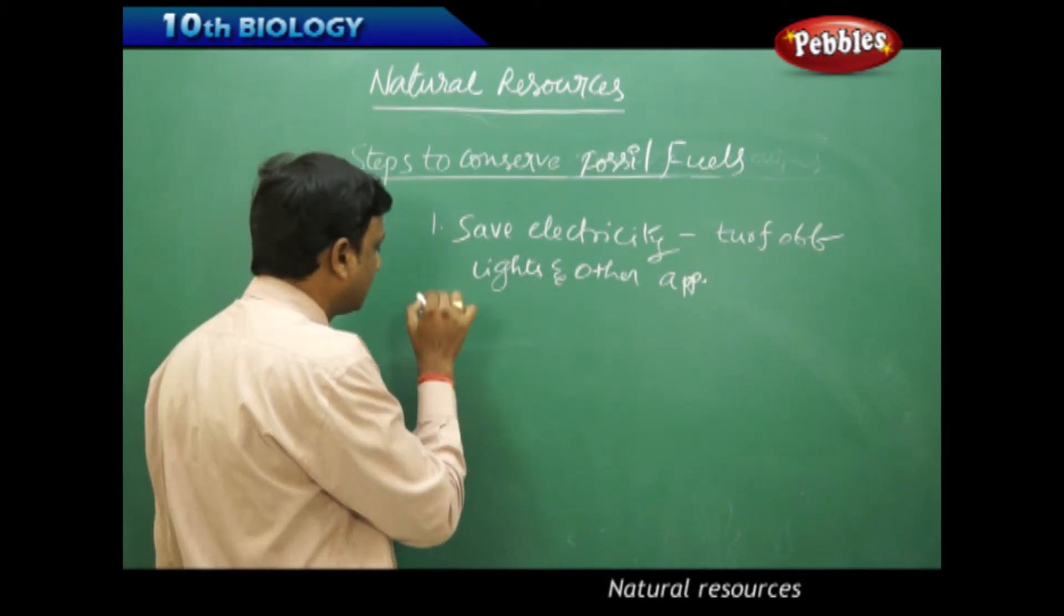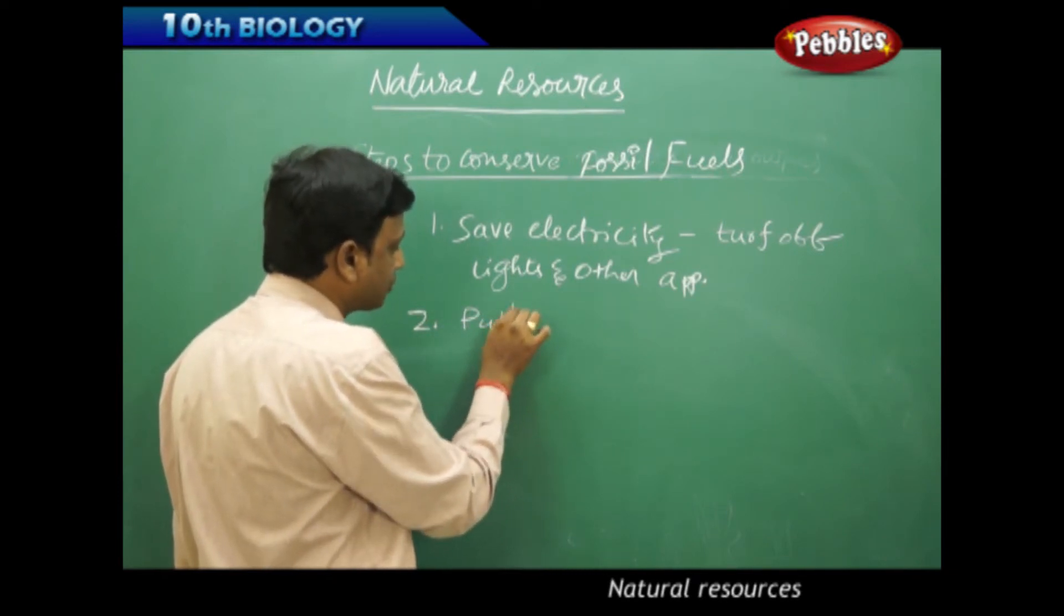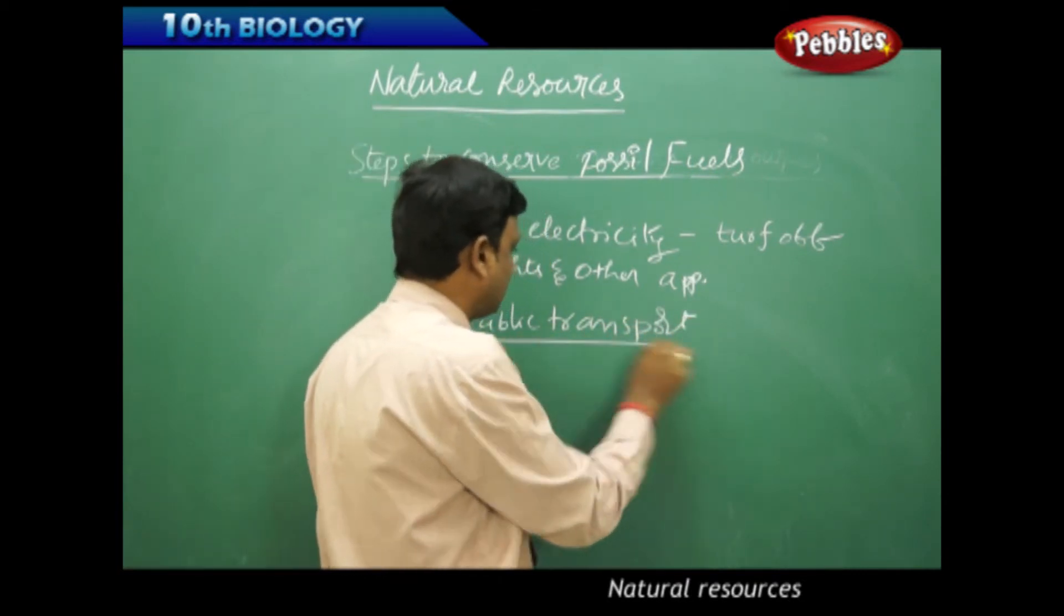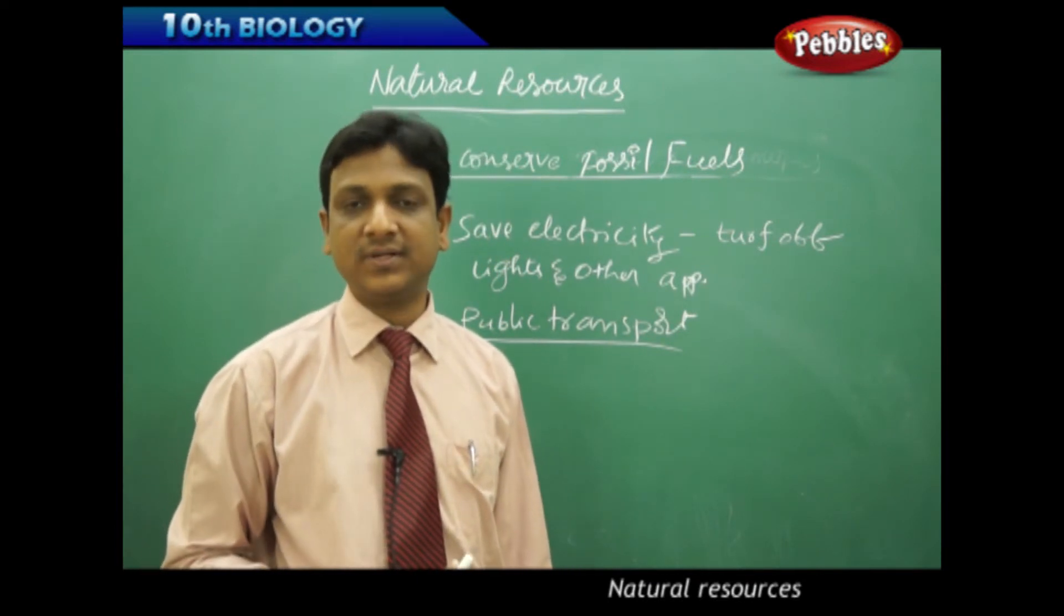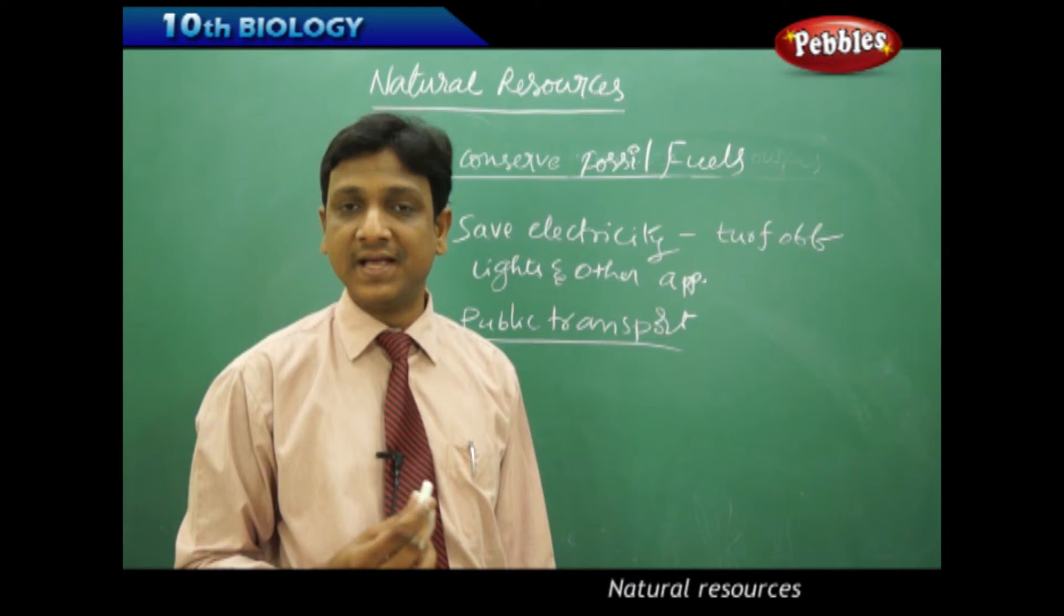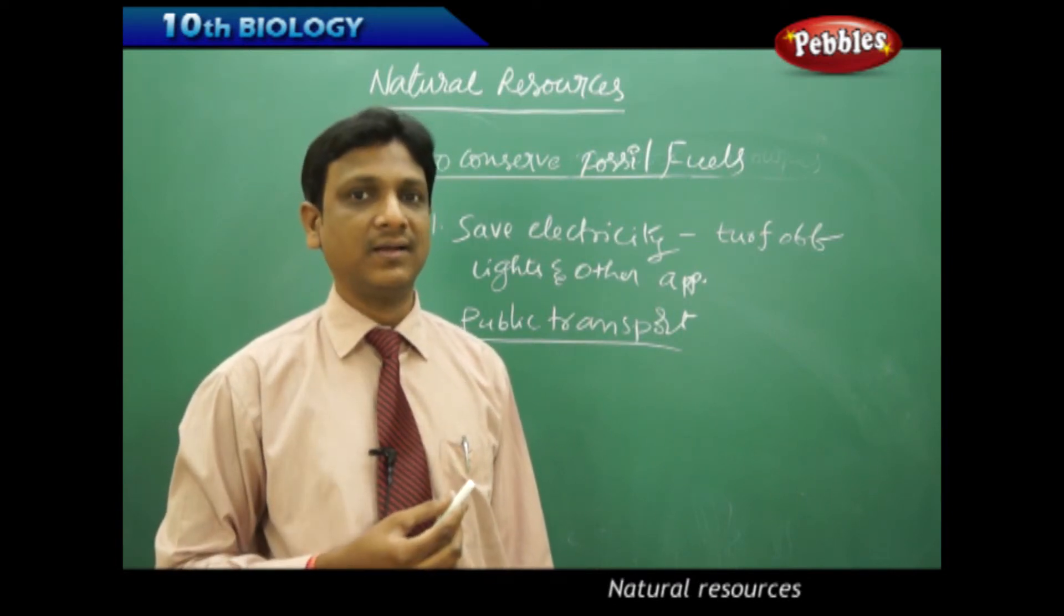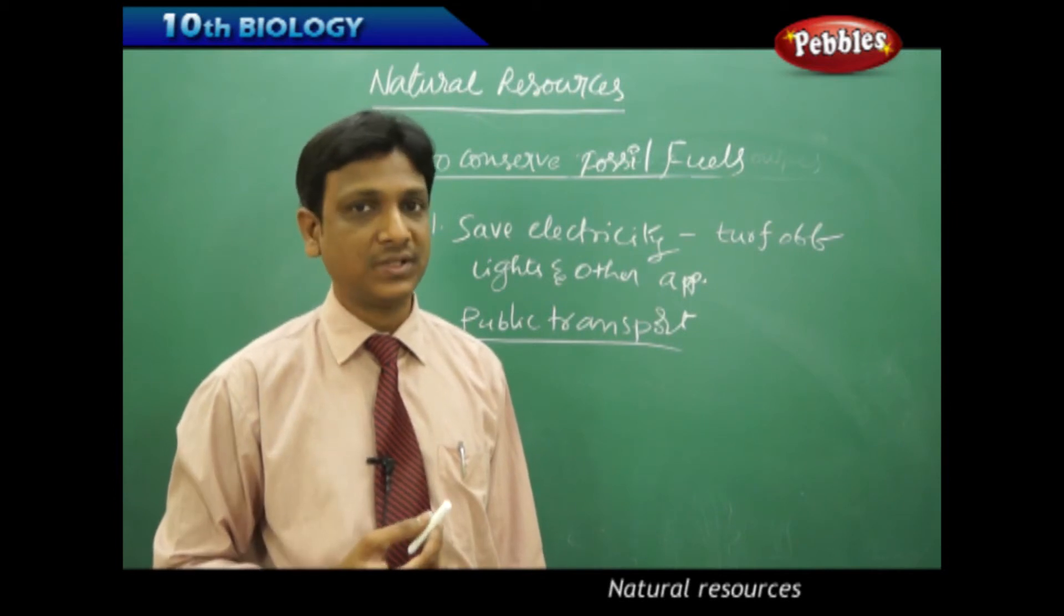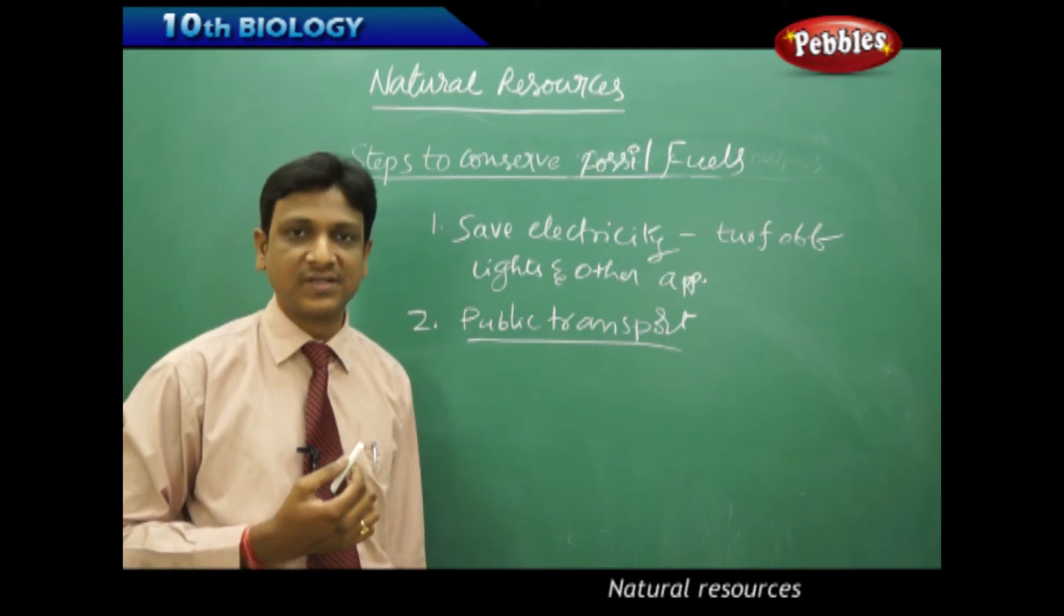And second thing is public transport. The second place where we waste the fossil fuel is taking up individual vehicles. Petrol is burnt in the vehicles, diesel is burnt in the vehicles. Everyone, every single person is taking one separate vehicle. Then how much pollution is caused? Say in a family, four people are taking four cars to go to their jobs.